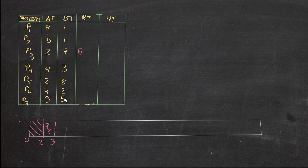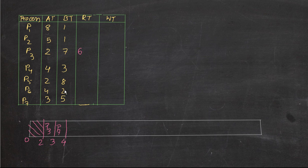P7's remaining time is five seconds. Since five is less than six, we execute P7. We always look for the shortest job first, so P7 is shorter and we execute it. Let's execute it until four seconds — just one unit at a time. Within four seconds, another process P4 arrives with a burst time of three, so its remaining time is three.